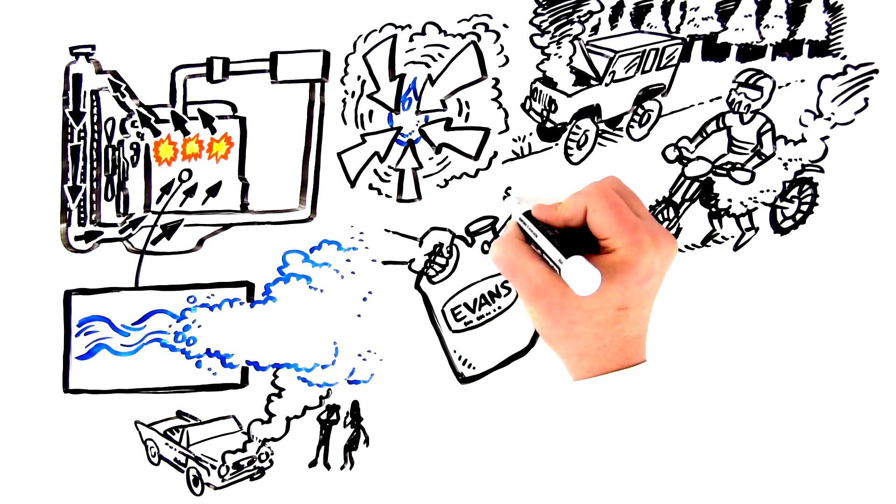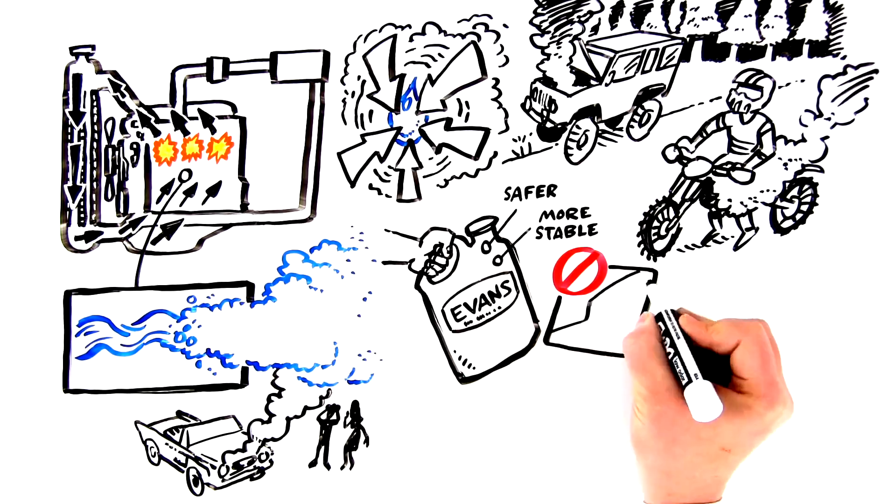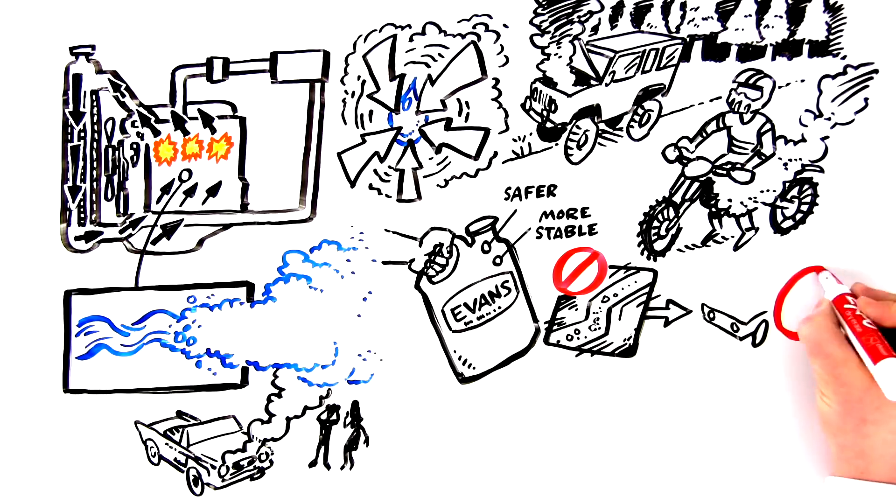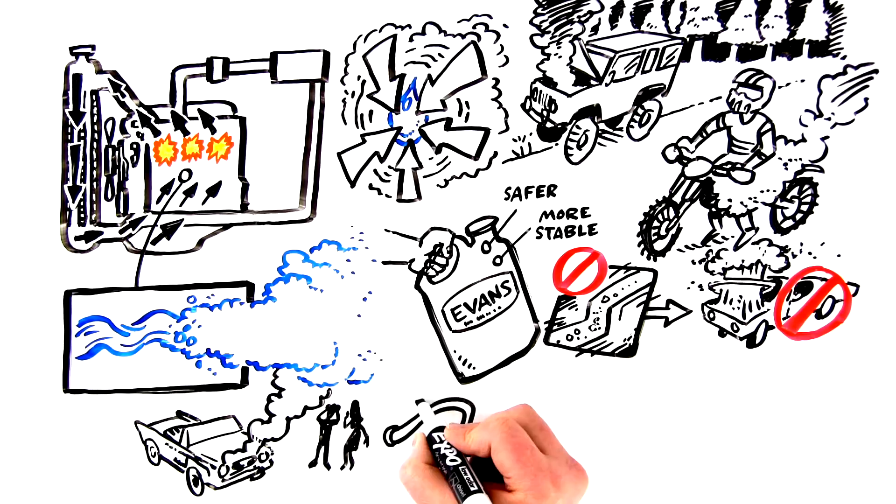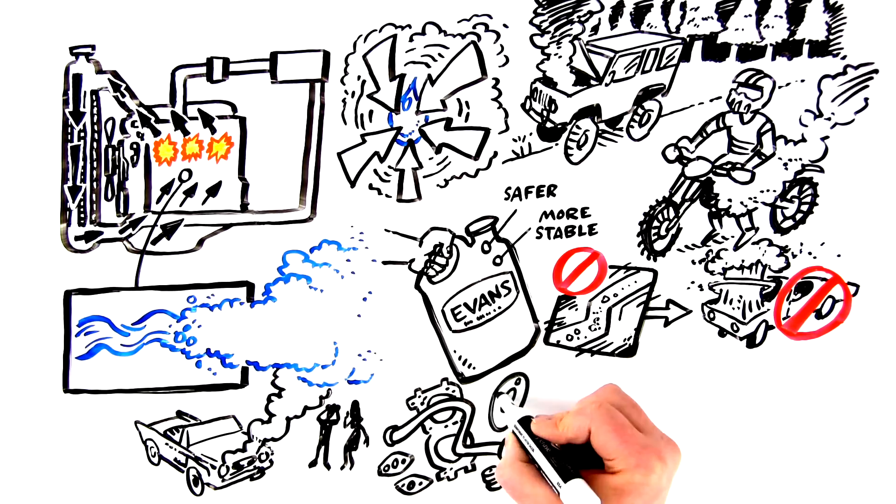Evans is safer and more stable than traditional coolants because it prevents the high-pressure levels that lead to boil-overs and volcanic radiator eruptions, meaning hoses, seals, and gaskets are less likely to leak and will last longer.